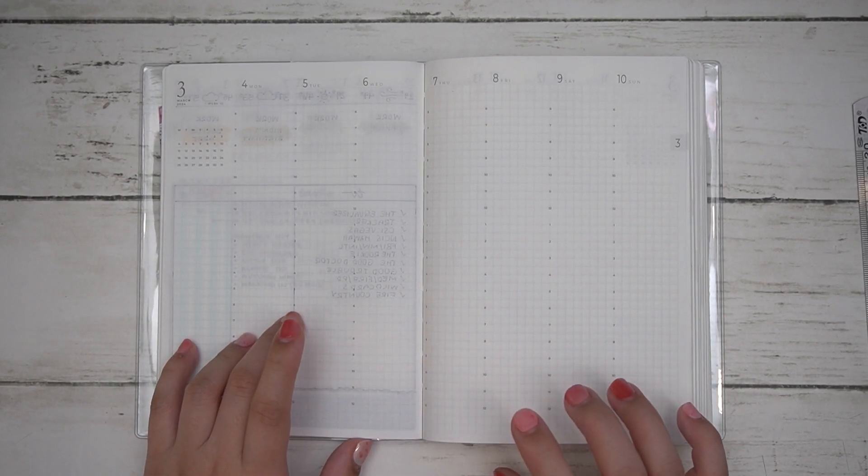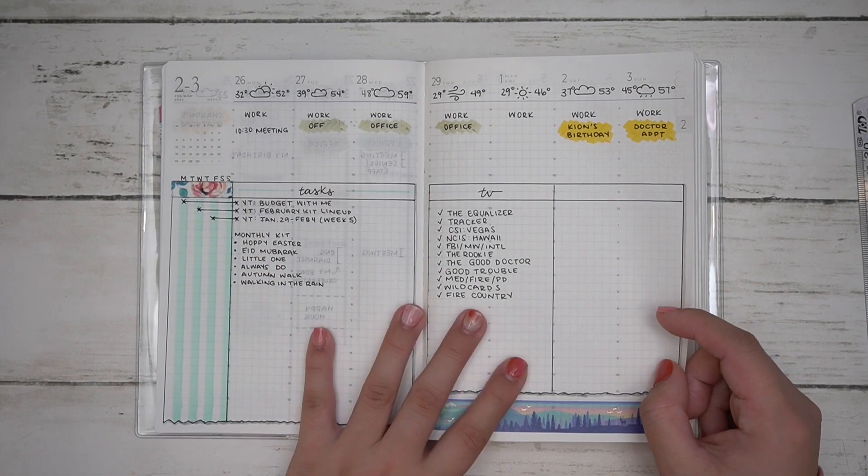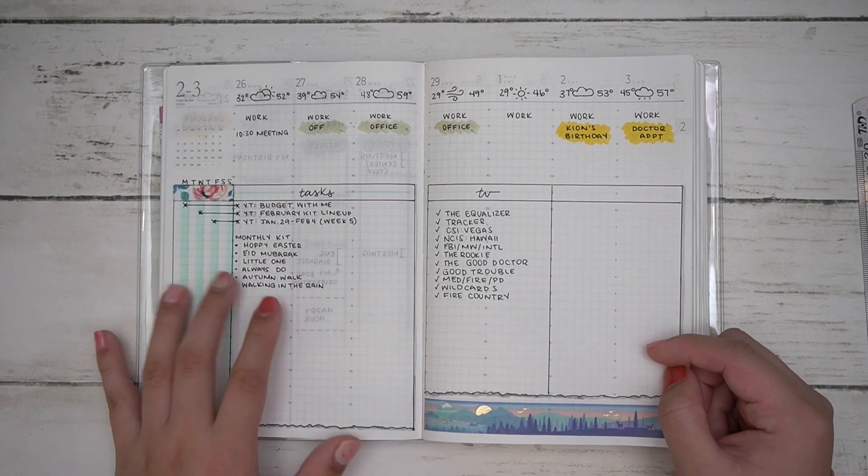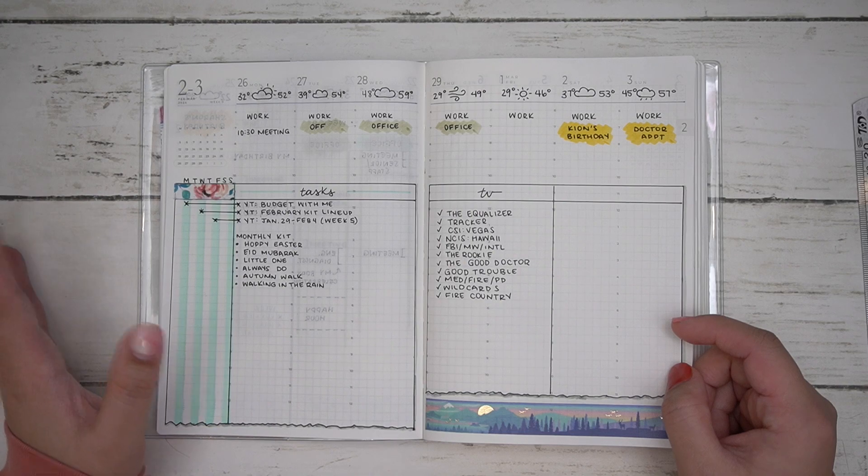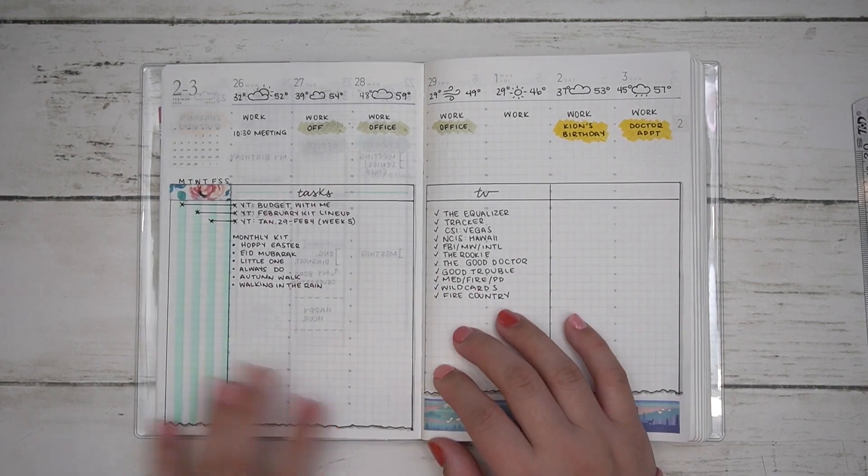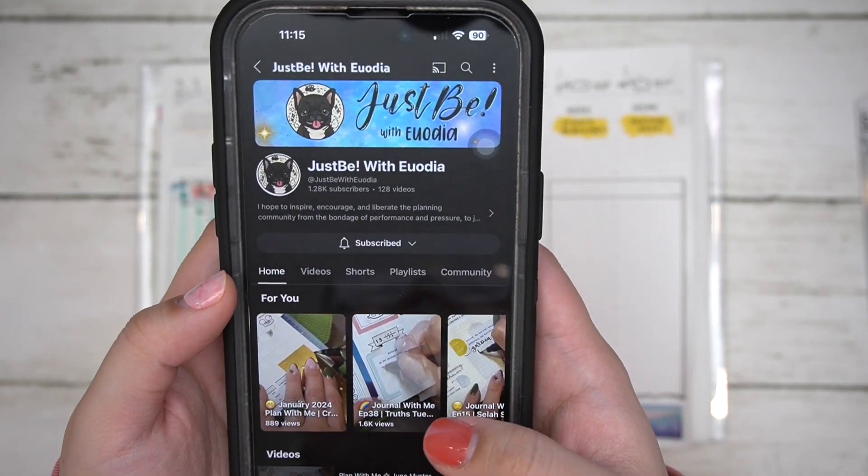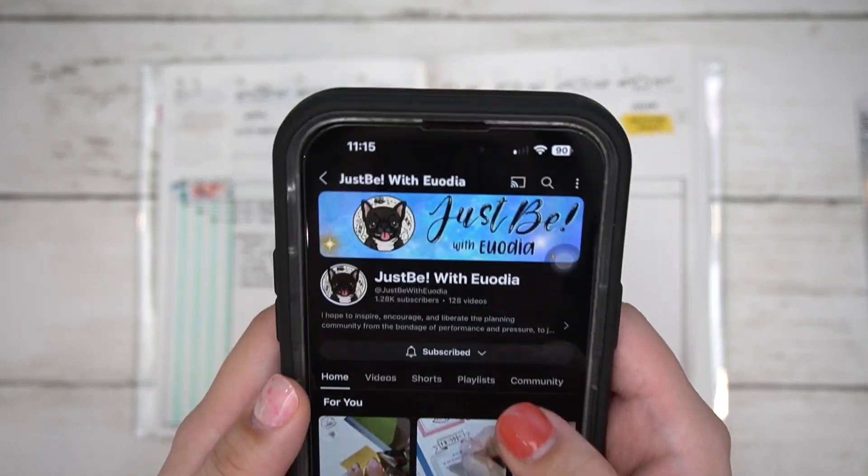Hi guys, welcome back to my channel. Today I'll be planning the week of March 4th to the 10th in my B6 Cannon planner from Sterling Inc. Last week I did a different spread than usual, which is inspired by Just Be with Yuria.